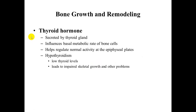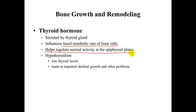A second hormone is thyroid hormone, secreted by the thyroid gland. It influences the basal metabolic rate of bone cells — how those cells produce energy — and helps regulate normal activity at the epiphyseal plates. For example, hypothyroidism, or low thyroid levels, results in impaired skeletal growth.